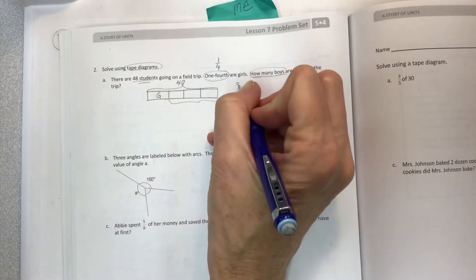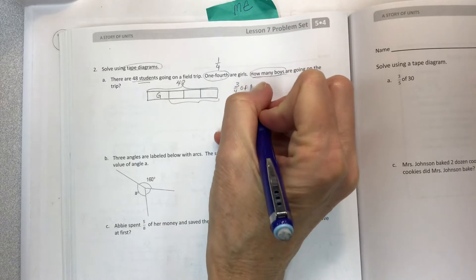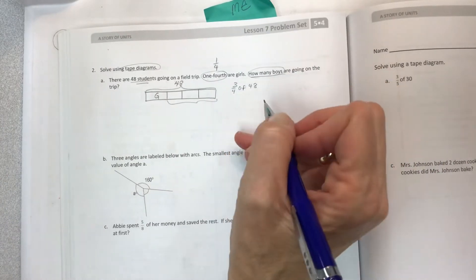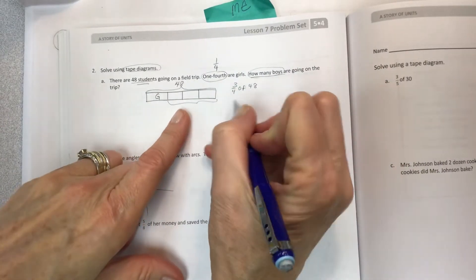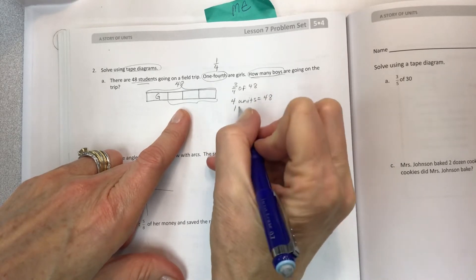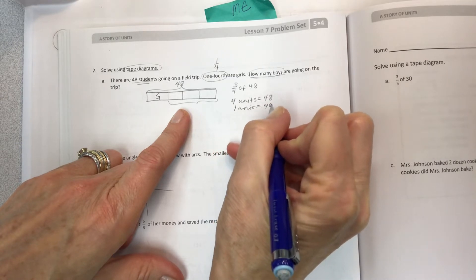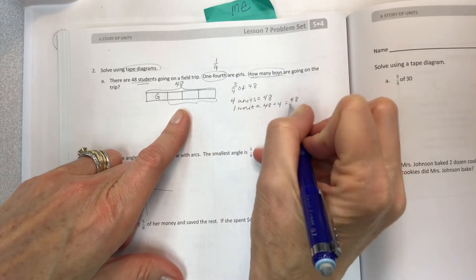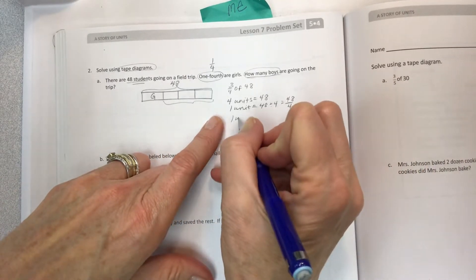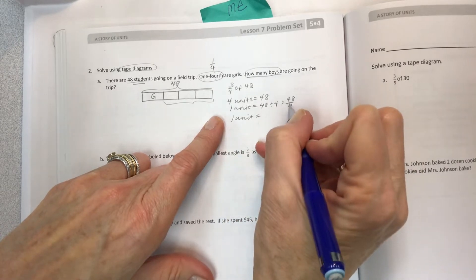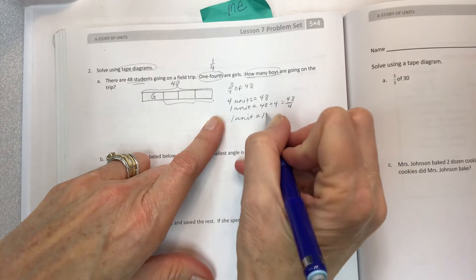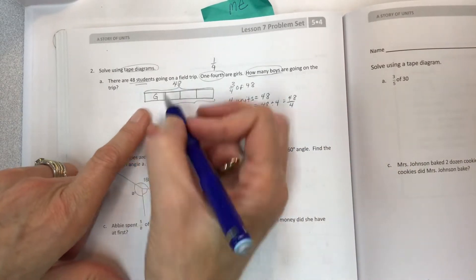You can still find one-fourth of 48 as the one unit. We've got our four units that make 48, so one unit would be 48 divided by 4. You should be able to do this mental math. 48 divided by 4 is 12.